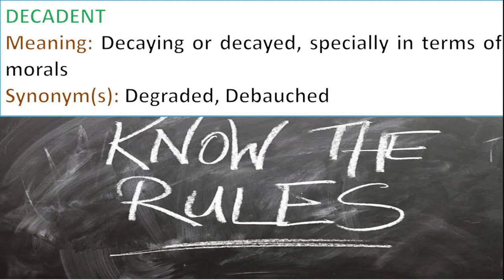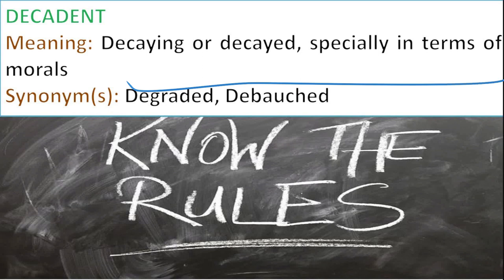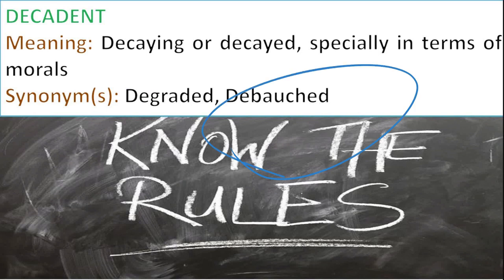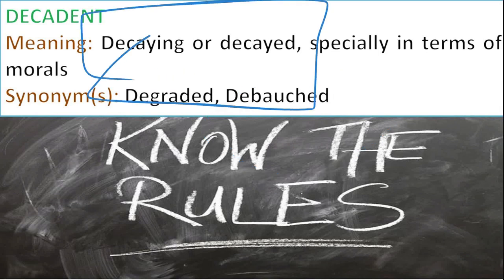Next one is decadent — it can be used as an adjective to describe a wasteful indulgence or extravagance. Celebrities who find themselves unable to manage sudden fame or fortune sometimes go overboard, throwing parties worth lakhs and lakhs of rupees, living the fast life, maybe turning to alcohol — we read about their decadent lifestyle in the tabloids. Decadent means decaying or decayed especially in terms of morals — degraded. So decadent is indulgence, a lot of it, but usually wasteful.